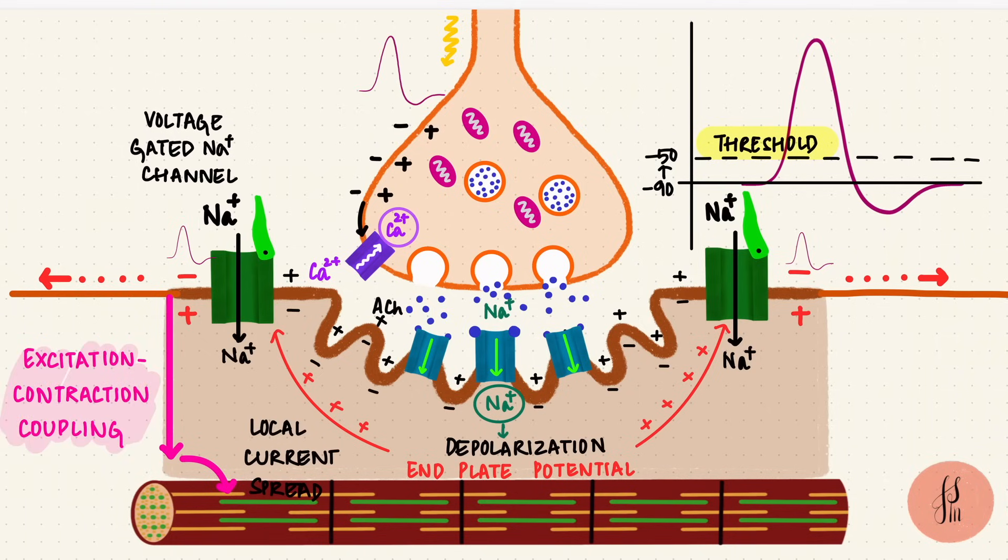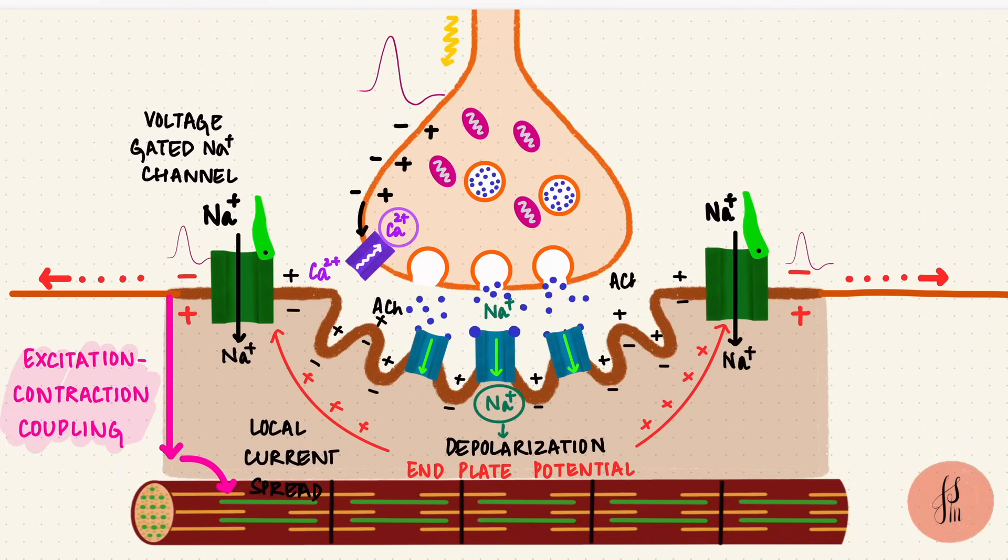But what happens to the acetylcholine? There's an enzyme in the synaptic cleft called acetylcholine esterase. This enzyme breaks down acetylcholine into acetate and choline.